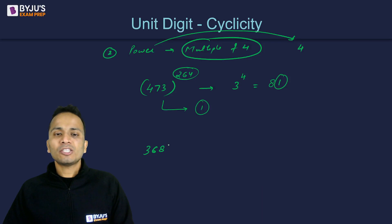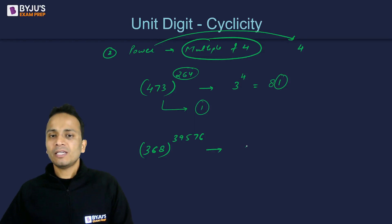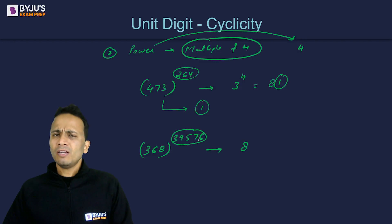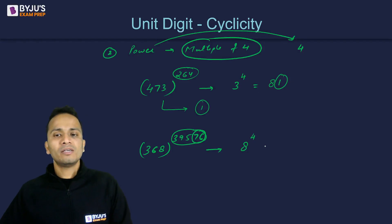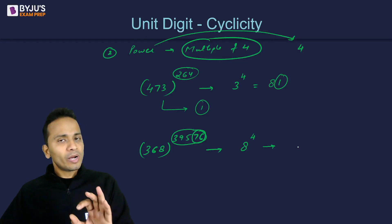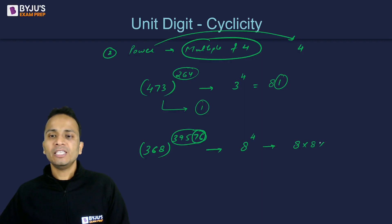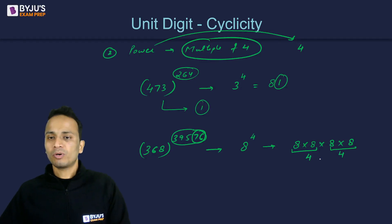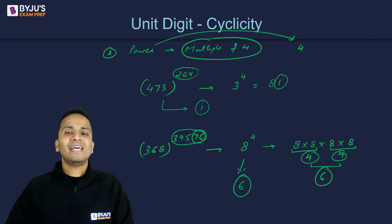Let's take one more example: 368 raised to the power 39576. In the base we write 8. For the power, we just check the last two digits — 76 — which is a multiple of 4, so we write 4 instead of the entire power. Now 8 raised to the power 4: we only need the unit digit. 8 times 8 gives unit digit 4, then 4 times 4 gives unit digit 6. So the unit digit of this entire number is 6.